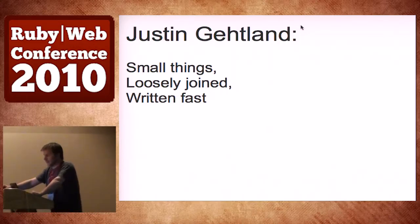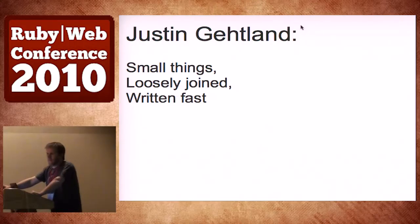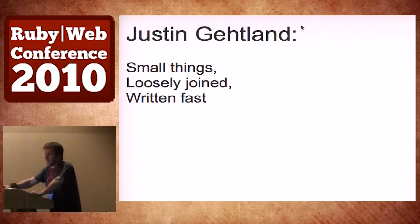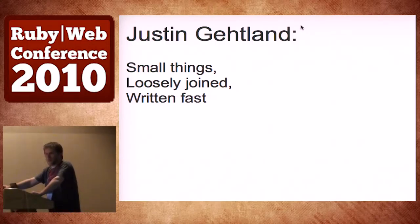In 2008, Justin Gatlin spoke at RailsConf. His talk was called 'Small Things Loosely Joined Written Fast.' The concept was: if we architect things smarter, we get more done with less resources, we can maintain it better, it's better code. And that's kind of the trick with integrating web apps — going smaller, going simpler, using other services, don't try to be everything.